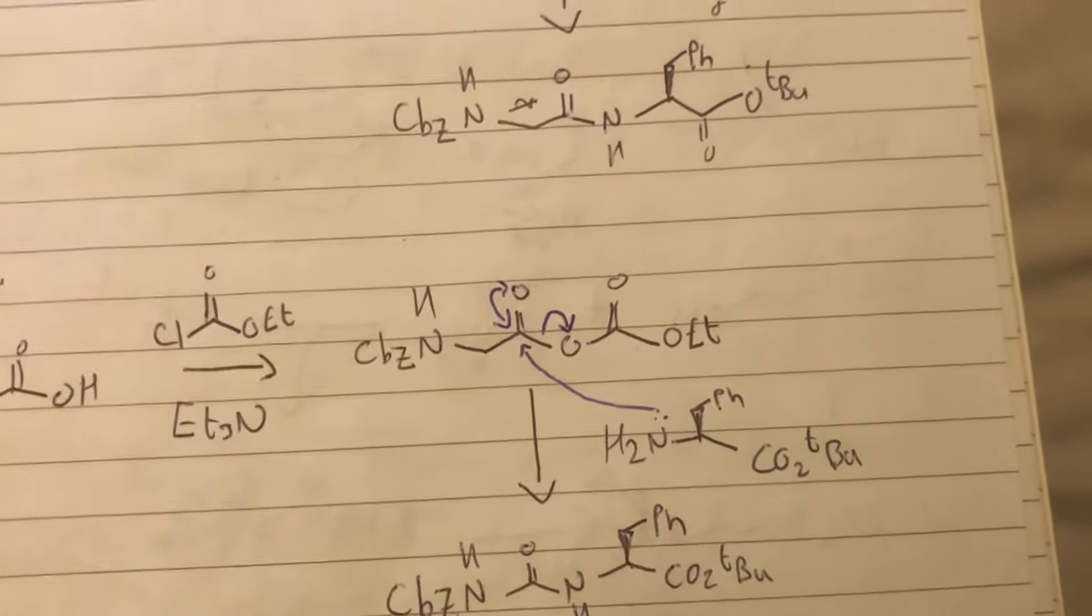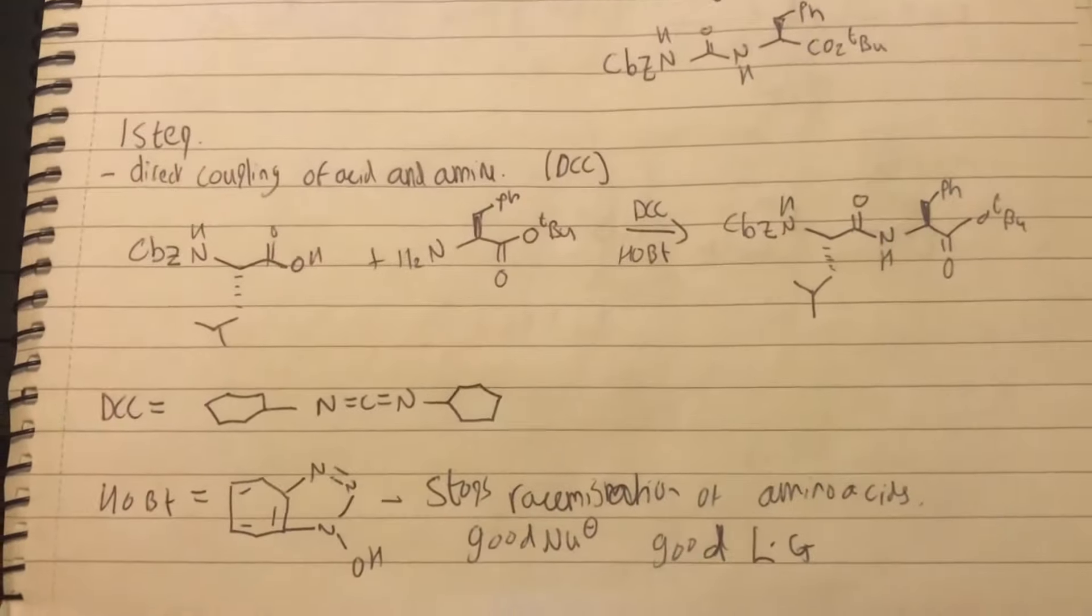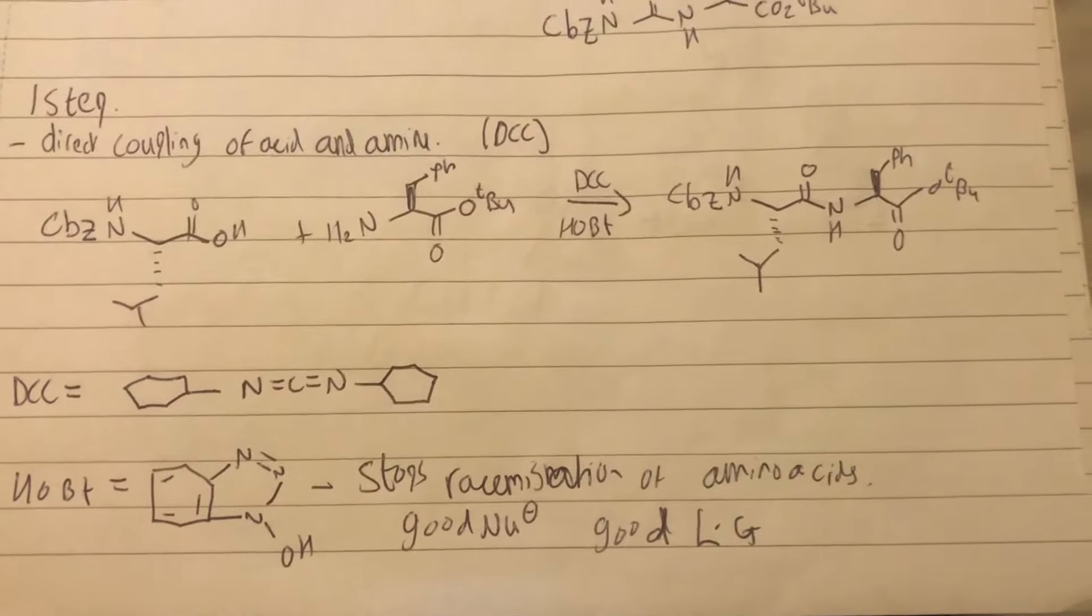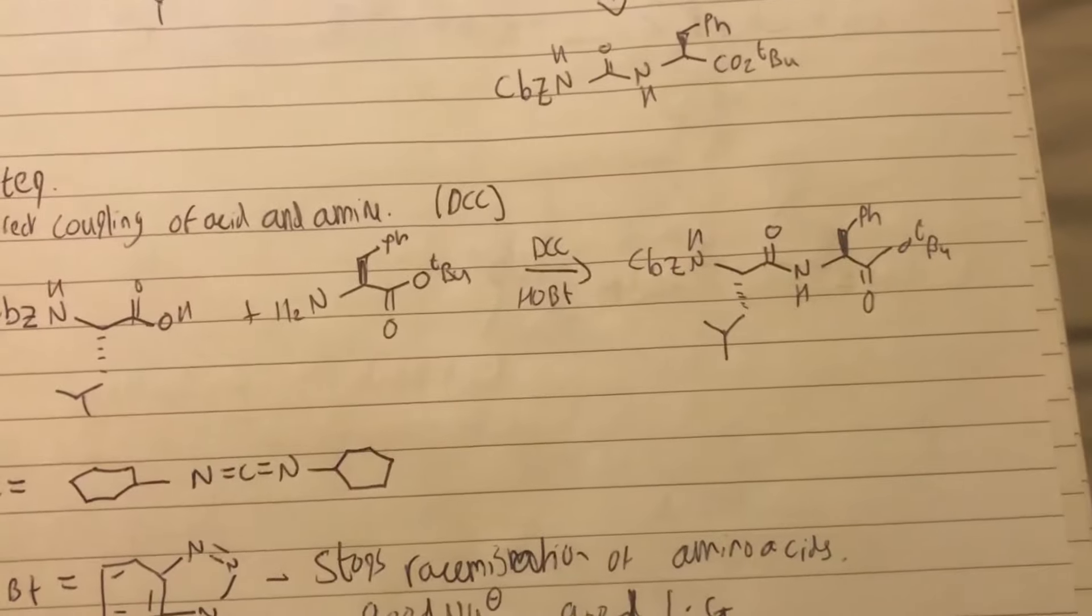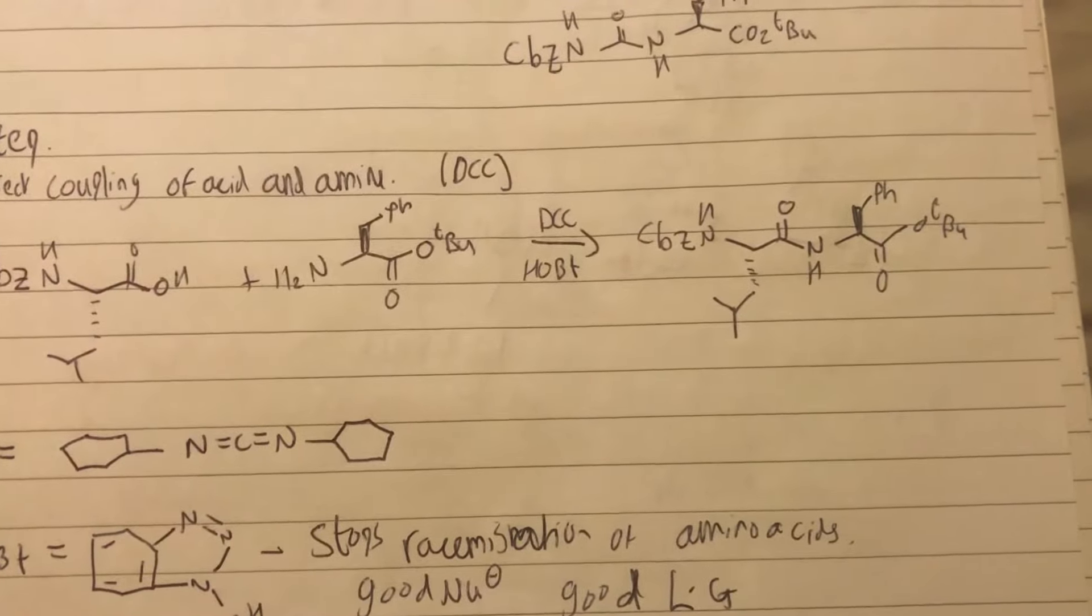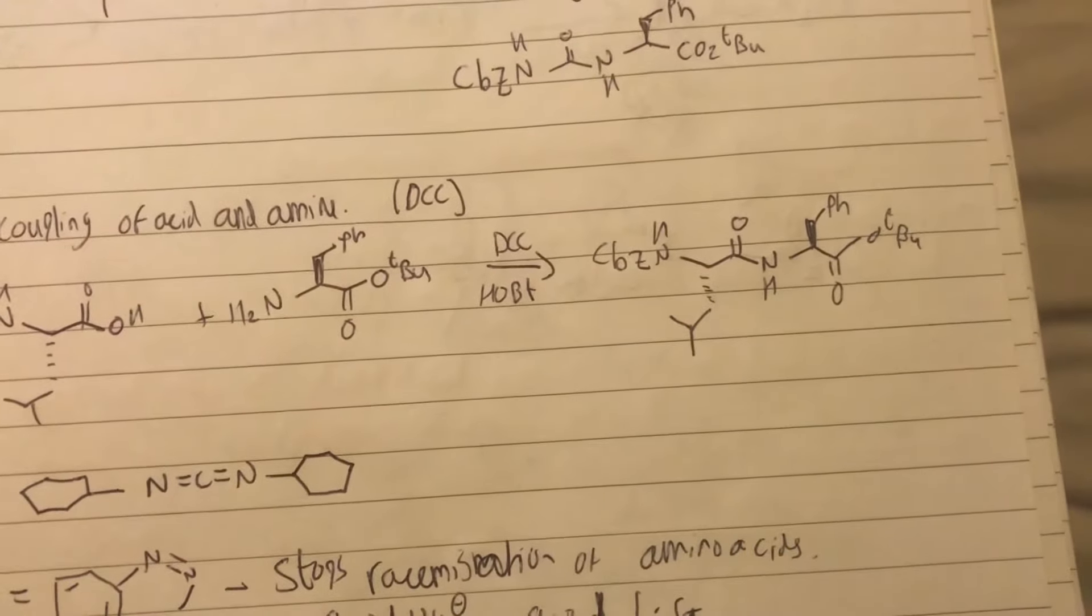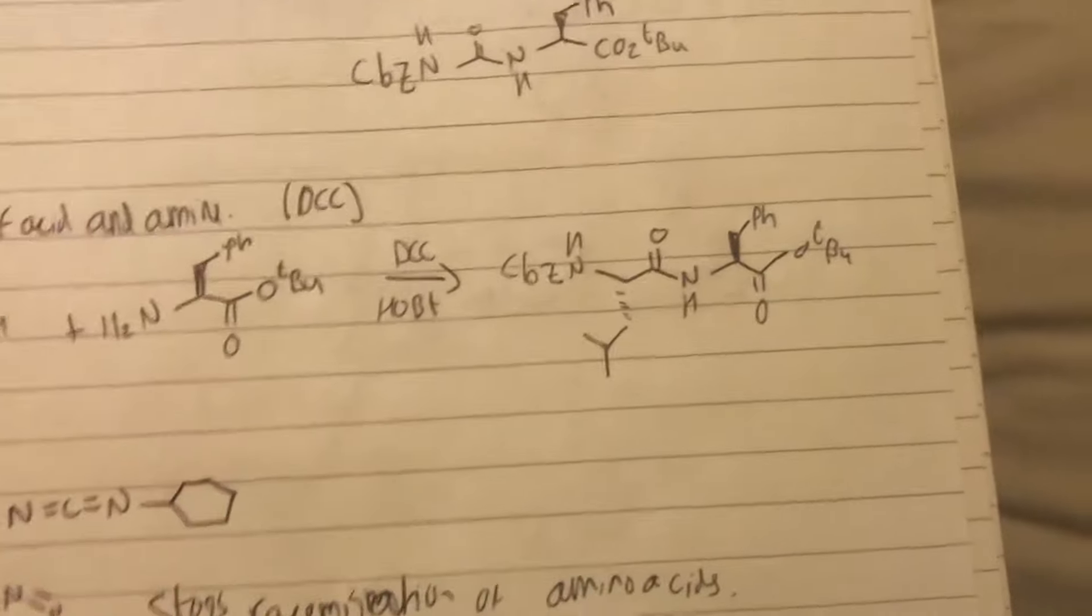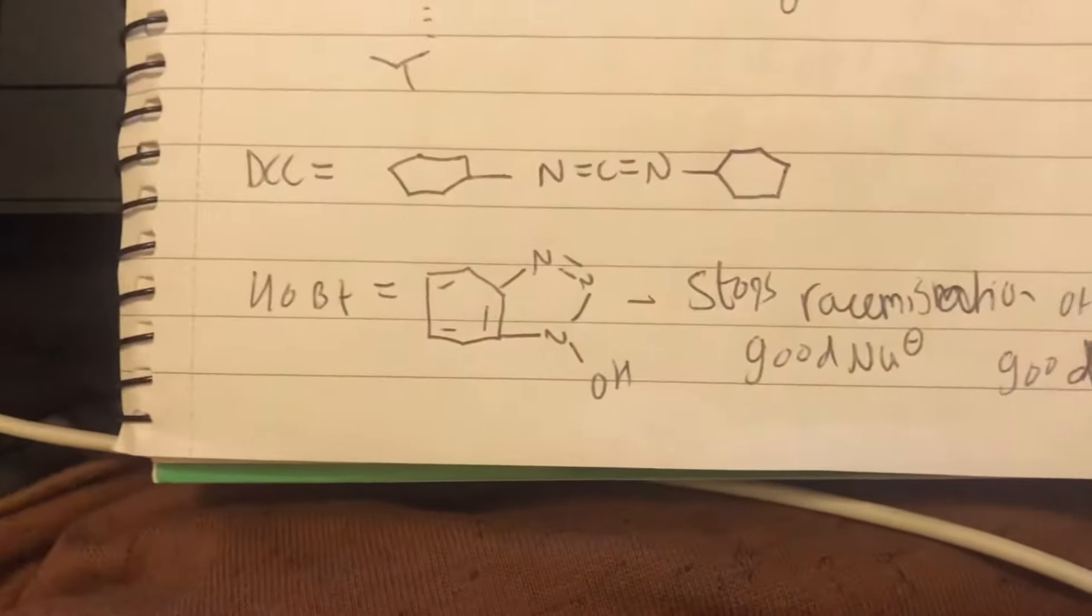We effectively just do exactly the same thing and instead kick off this group instead. In this case we've got the one-step, the direct coupling of acid and amide, which obviously just does it in one step as it says. We use DCC which stands for the direct coupling, and we use HOBT as well.